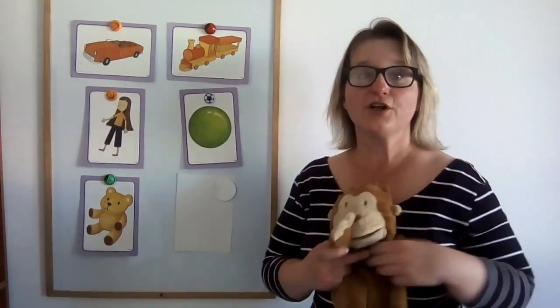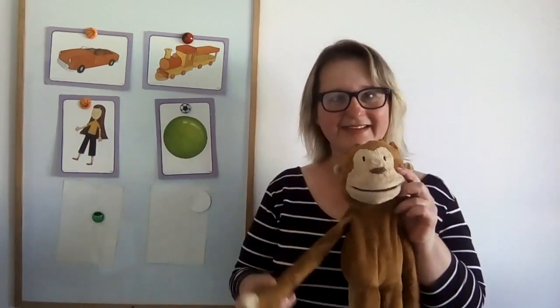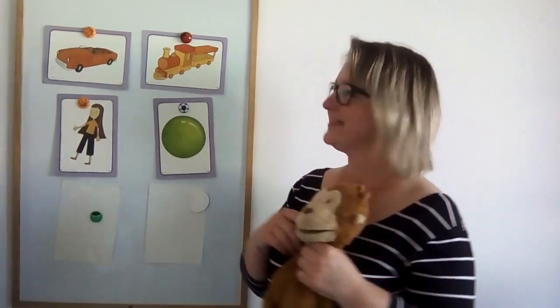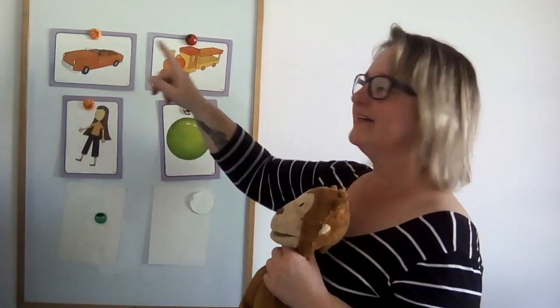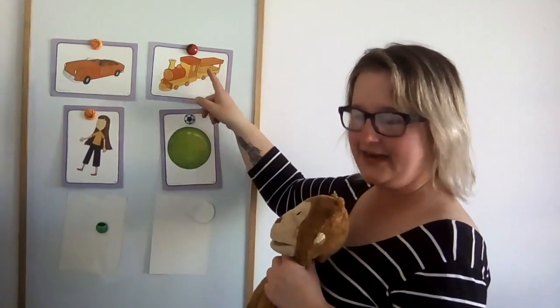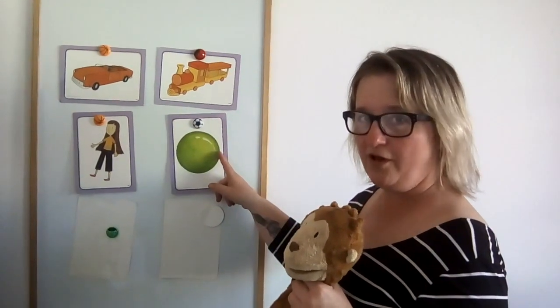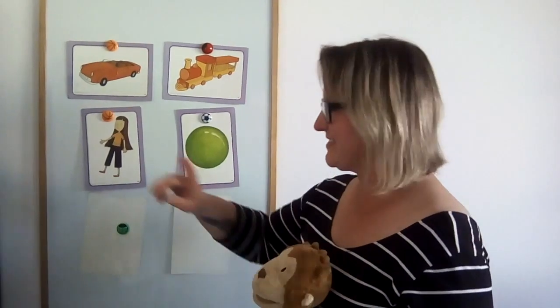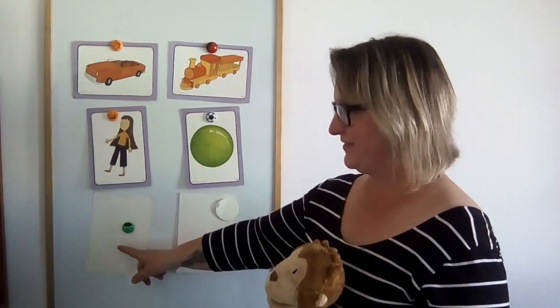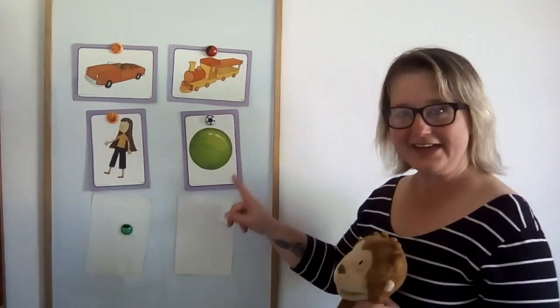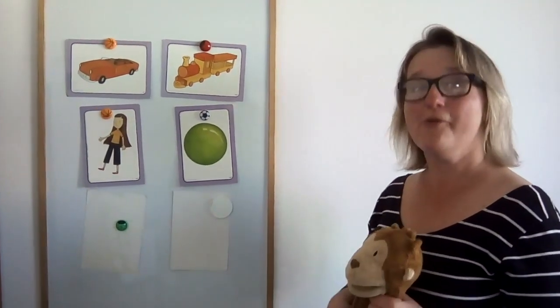And now close your eyes again. Open your eyes and let's read. A car, a train, a doll, a ball. Hmm, what's here? What's here, Monkey? What's here, children? Yes, it's a teddy and it's a yo-yo. Well done!